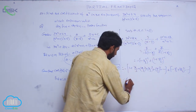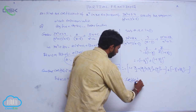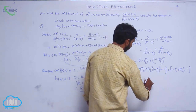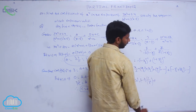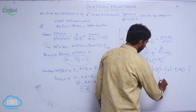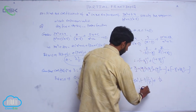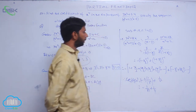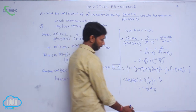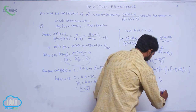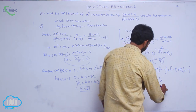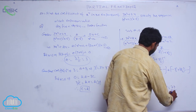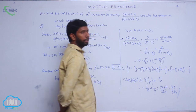Therefore, the coefficient of x⁴ is equal to -1·(1/3)⁴ + (1/2)² = -1/81 + 1/4. Taking LCM of 324: that is (-4 + 81)/324 = 77/324. The coefficient of x⁴ is 77/324.